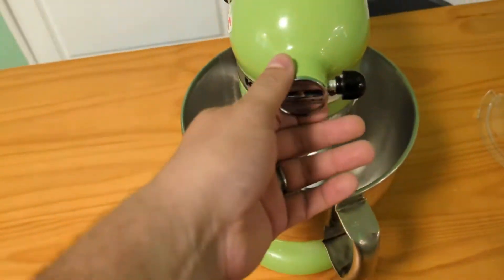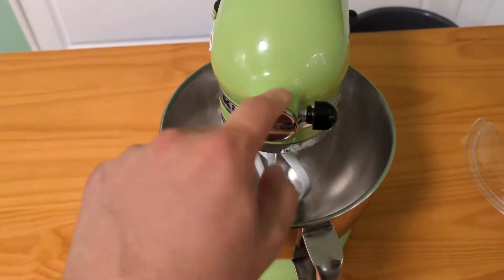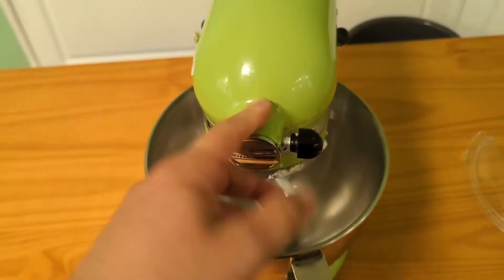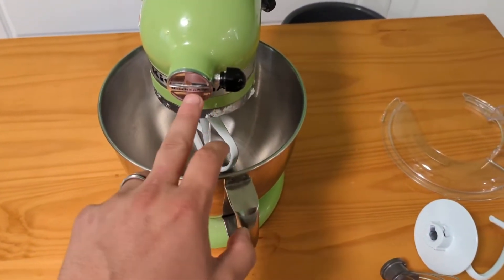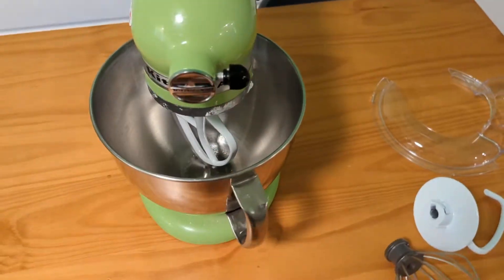The stand also has a power takeoff here for accessories, which you can actually go and see other videos of this. But I have a bunch of, there's like a spiralizer. There's a meat grinder that goes on this. There's a bunch of stuff. And this is actually where the gear is, where it actually attaches.